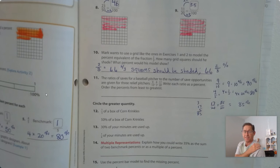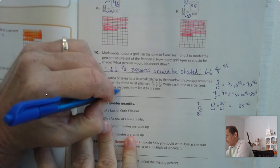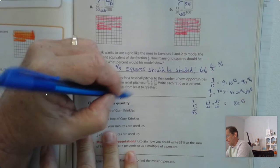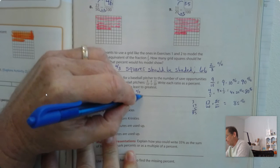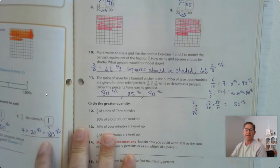And we have to write these in order from least to greatest. Well, the least percent is 80%. The second smallest is 85%, and the greatest is 90%.